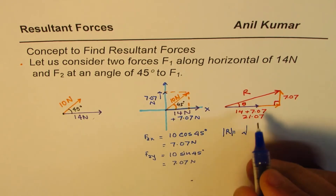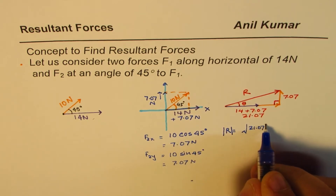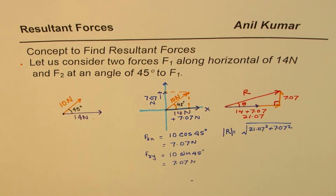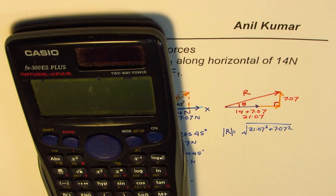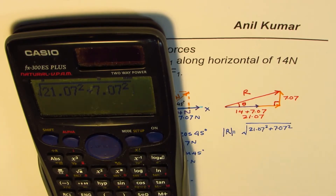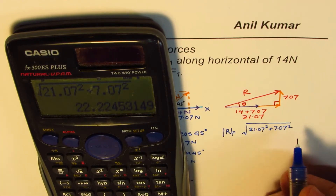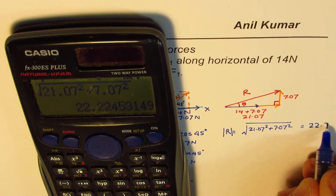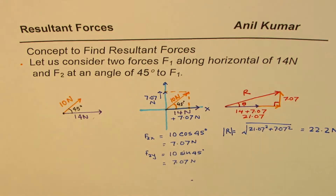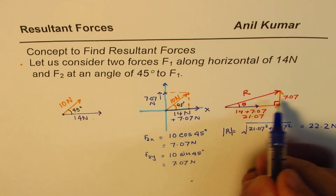We can find the resultant using the Pythagorean theorem. The magnitude of R equals the square root of 21.07 squared plus 7.07 squared. Calculating this gives us a resultant of approximately 22.2 Newtons.